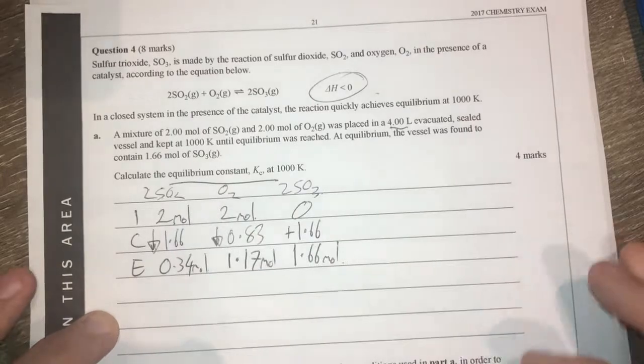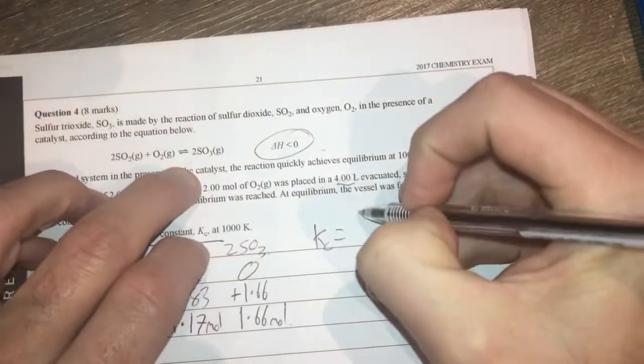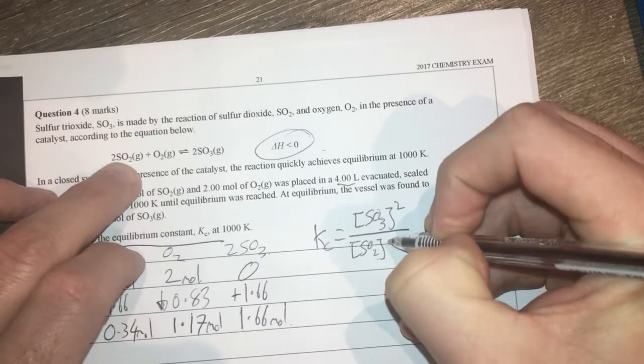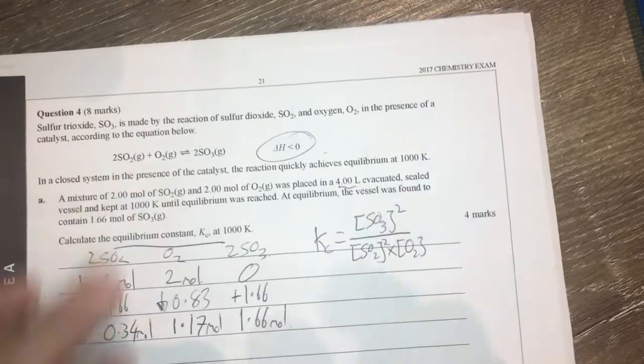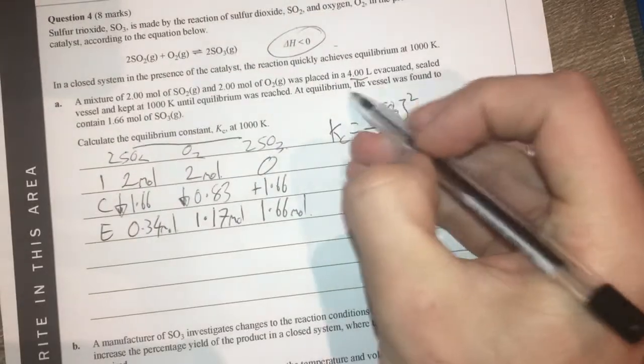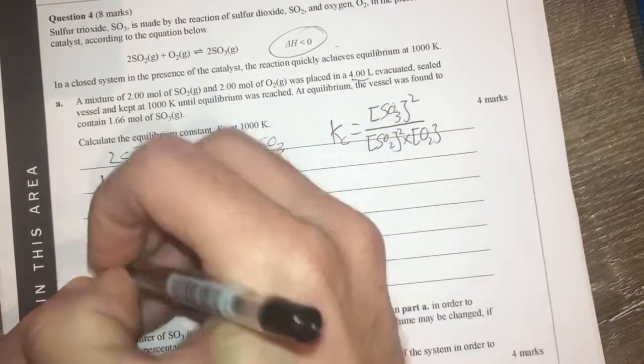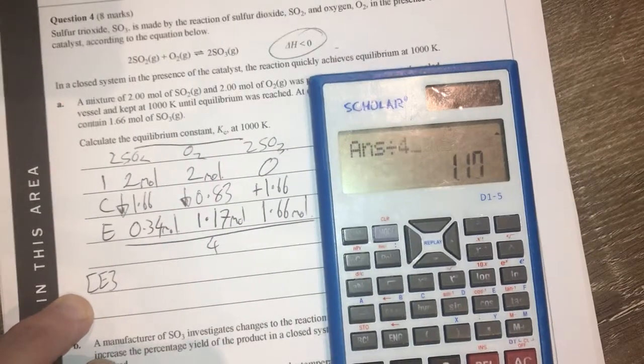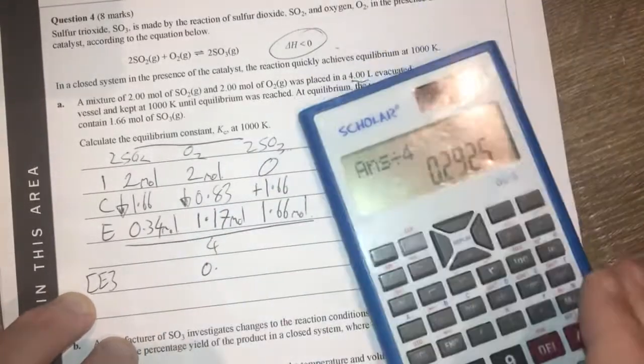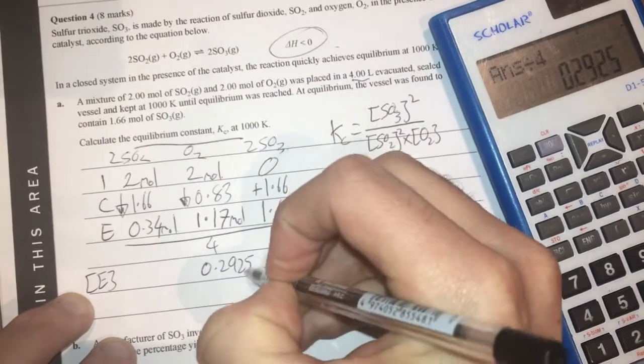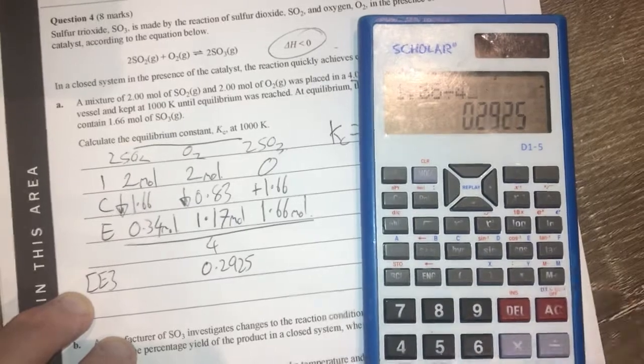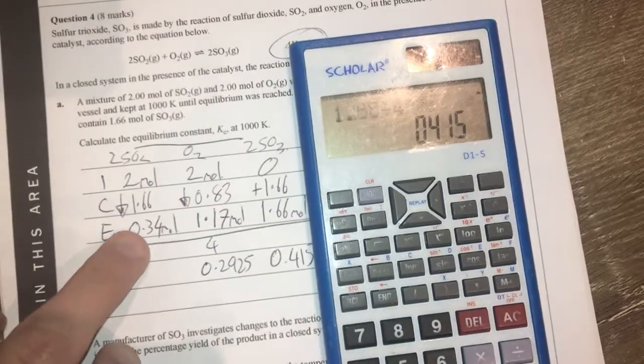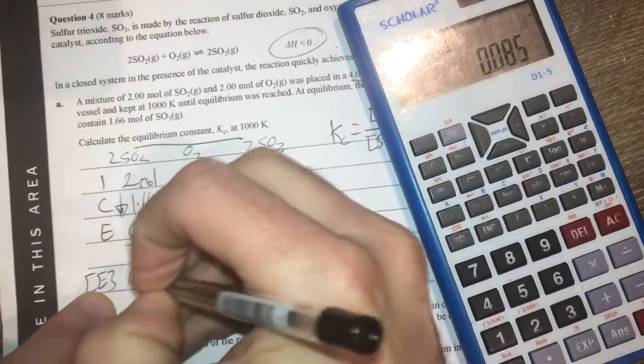We want to find an equilibrium constant. Here I write Kc equals products concentration of SO3 squared divided by my reactants concentration of SO2 squared times concentration of oxygen. Now I need concentrations. This is where my four liters comes into play so therefore I need to find this into concentration. So my concentration at equilibrium is going to be equal to all these divided by 4. So I'm going to take that number and divide that by 4 and that's going to give me 0.2925. 1.66 divided by 4 gives me 0.415. And then 0.34 divided by 4 gives me 0.085.